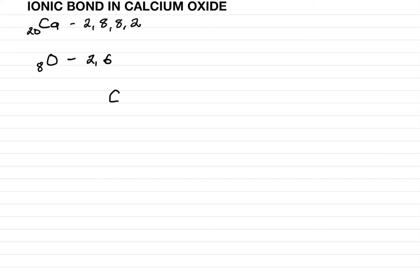We write Ca and make two crosses to show the electrons of calcium. When talking about bonding, we focus on the outermost valence shell. Calcium has two electrons in its outermost shell. For oxygen, we use dots — oxygen has six electrons, so we place four and then five and six.